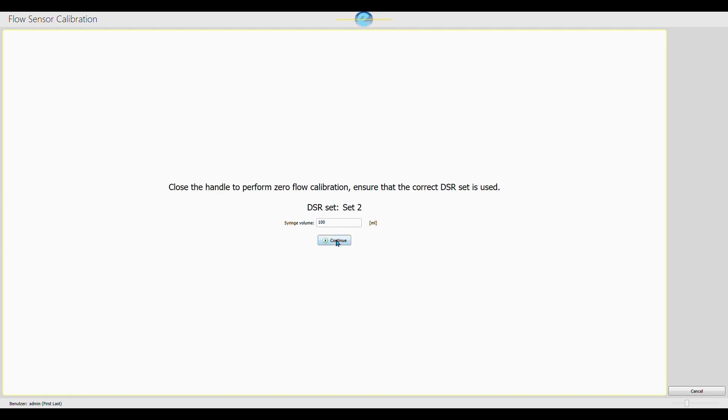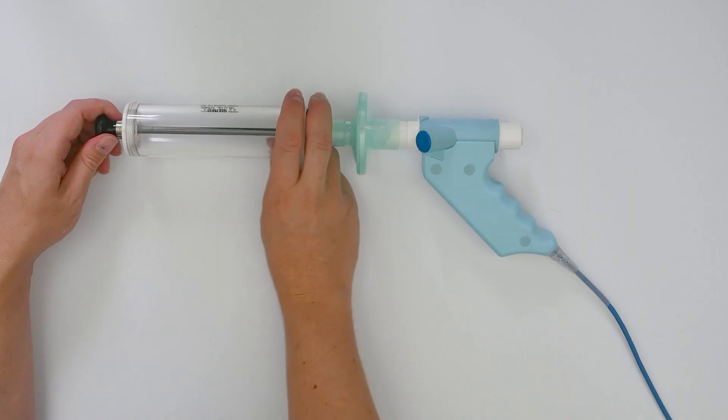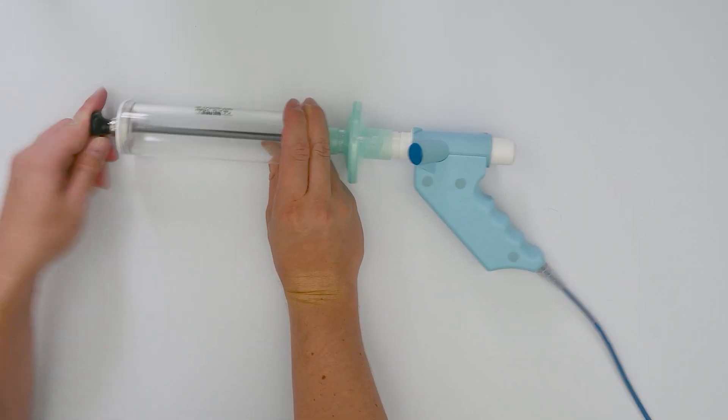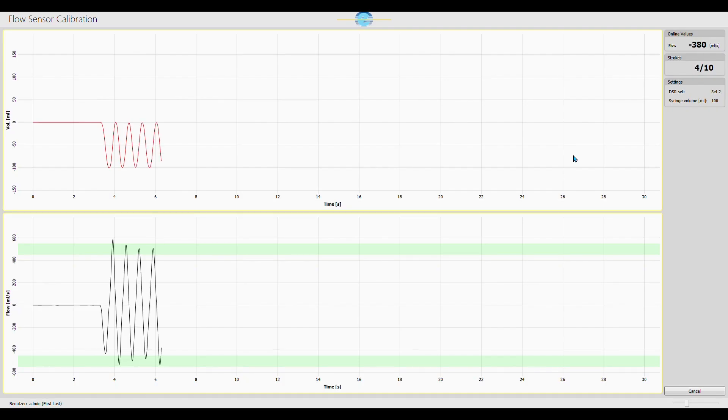When you see the calibration screen, perform 10 strokes with the calibration syringe. Ideally, the flow should be within the green boundaries. A green check mark signals a successful calibration.